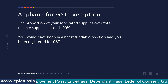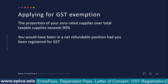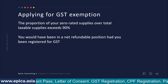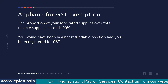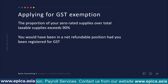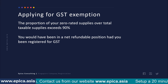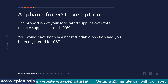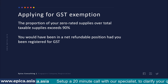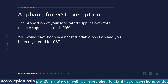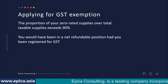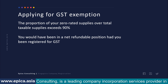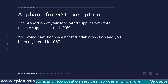However, IRAS has given an opportunity to apply for GST exemption. The rule is: if the proportion of your zero rated supplies over total taxable supplies exceeds 90 percent, and you would have been in a net refundable position had you been registered for GST, then you can apply for GST exemption. Both conditions must be satisfied. Once you get the exemption you cannot charge GST on local sales or claim refunds on input side tax.